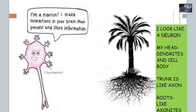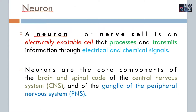As we all know, the neuron is the basic structure of our nervous system and it is the major structure that processes and stores information. A neuron or a nerve cell is an electrically excitable cell that processes and transmits information through electrical and chemical signals. Neurons are the core components of the brain and spinal cord of the central nervous system and the ganglia of the peripheral nervous system.